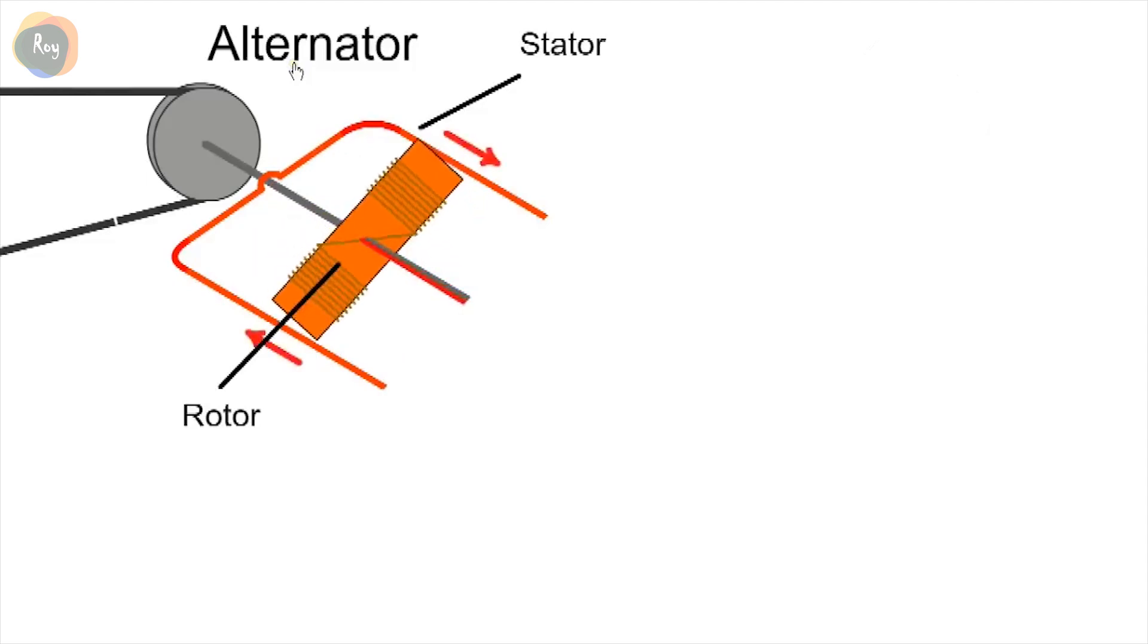The alternator is used to supply energy when the engine is running and is belt-driven from the crankshaft. It consists of a stationary winding called the stator and a rotating magnet. When the magnet rotates, the magnetic field induces a voltage in the stationary conductors.